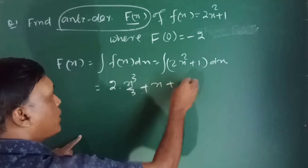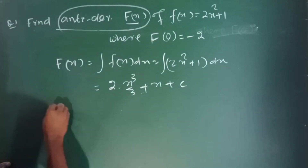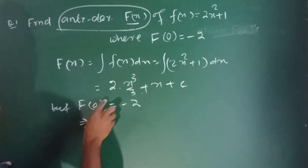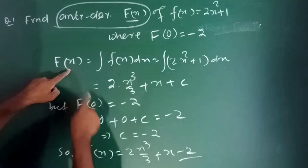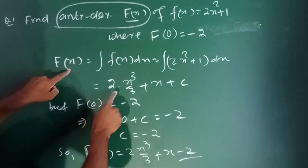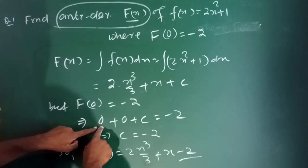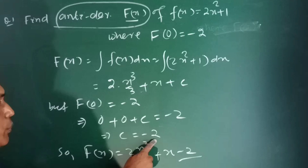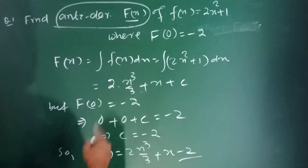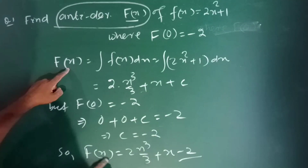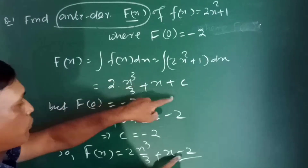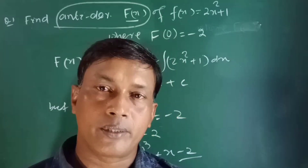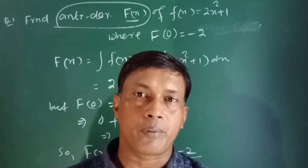We are given that f of 0 is equal to minus 2. Putting x equal to 0 in F of x: 2 times 0 plus 0 plus c equals minus 2, so c equals minus 2. Therefore F of x equals 2x cubed over 3 plus x minus 2. These two problems are very important for exam purposes.